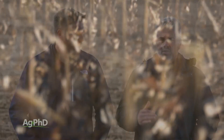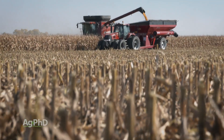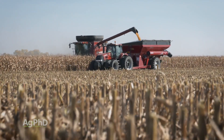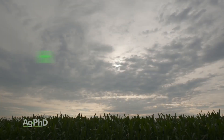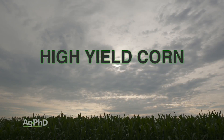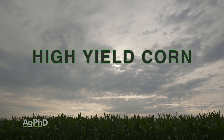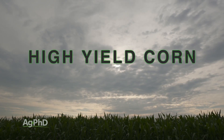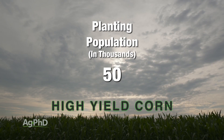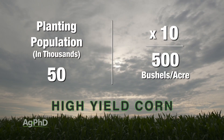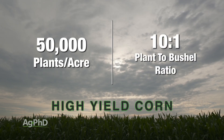Let's start by looking at some of the highest yielding farmers in the world — what are they getting for bushels based on planting population? What we want to do is multiply by 10. So if we've got 50,000 planting population, times 10 is 500. A lot of the highest yielding guys getting 500 bushel corn are planting roughly 50,000 population, so 10 to 1 is the ratio.